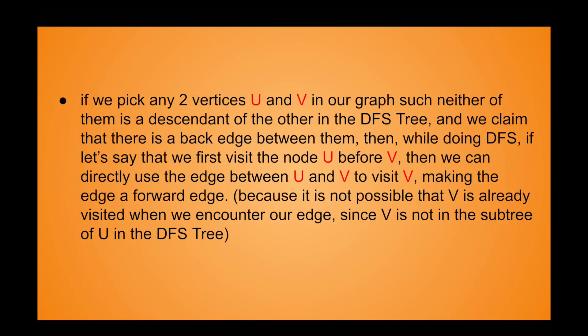An extremely important property of the DFS tree is that back edges always connect a node to its descendant or ancestor in the DFS tree. This can be very easily proved: if we pick any two vertices U and V such that neither is a descendant of the other, and we claim there is a back edge between them, then without loss of generality if we visit U before V, we can directly use the edge from U to V to visit V, making it a forward edge — a contradiction.